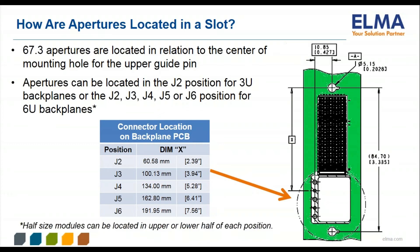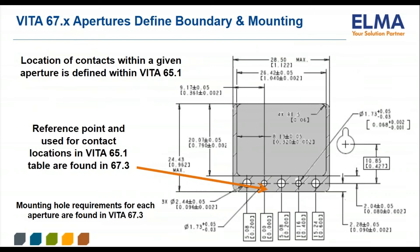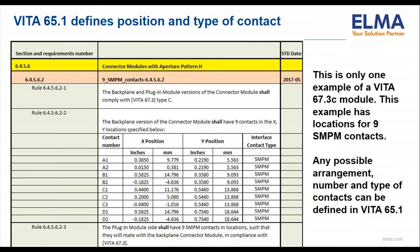Vita 67.3 defines the required mounting holes for each size aperture, the reference point, and cutout dimensions given for each aperture size. The location, type of contact, and coordinates for the contact locations within the module envelope must be defined by the original module designer and are recorded in a Vita 65.1 table for each new Vita 67.3 module configuration. Here's an example from Vita 65.1 of how the contact type and its position coordinates are shown for each defined Vita 67.3 module.